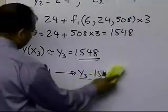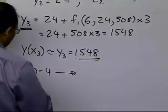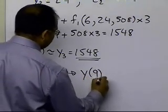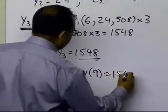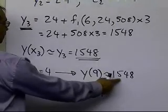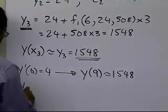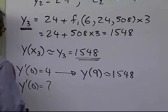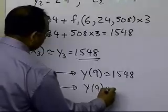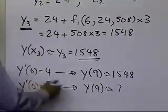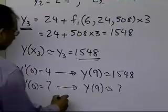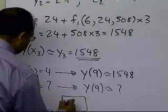By assuming y'(0) equal to 4, what we have found out is that y(9) is approximately equal to 1548. But y(9) is actually 0. So we need to assume y'(0) to be something else, so that we get a different value for y(9) which will hopefully be close to 0. That's something we'll do in the next segment.